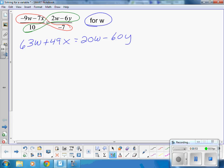That will equal 20W minus 60Y. I want to solve for W, so I want to move all my W's to the left side. That means I'm going to subtract this 20W from both sides. When I do that, it leaves me with 43W plus 49X equals negative 60Y.